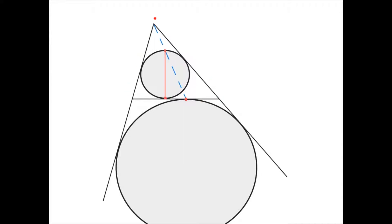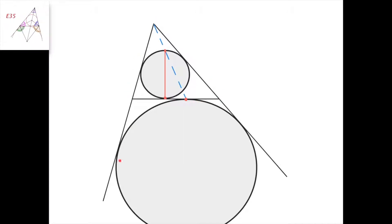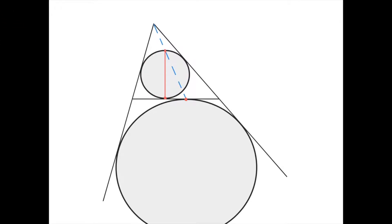Suppose we have a triangle, one of its excircles, and its incircle. Suppose this is the tangency point of the incircle on this side, and this is the tangency point of the excircle on this side. This is the diametrically opposite point to the incircle tangency point in the incircle, which means that this here is a diameter of the incircle. We need to prove that these three points lie on a straight line.